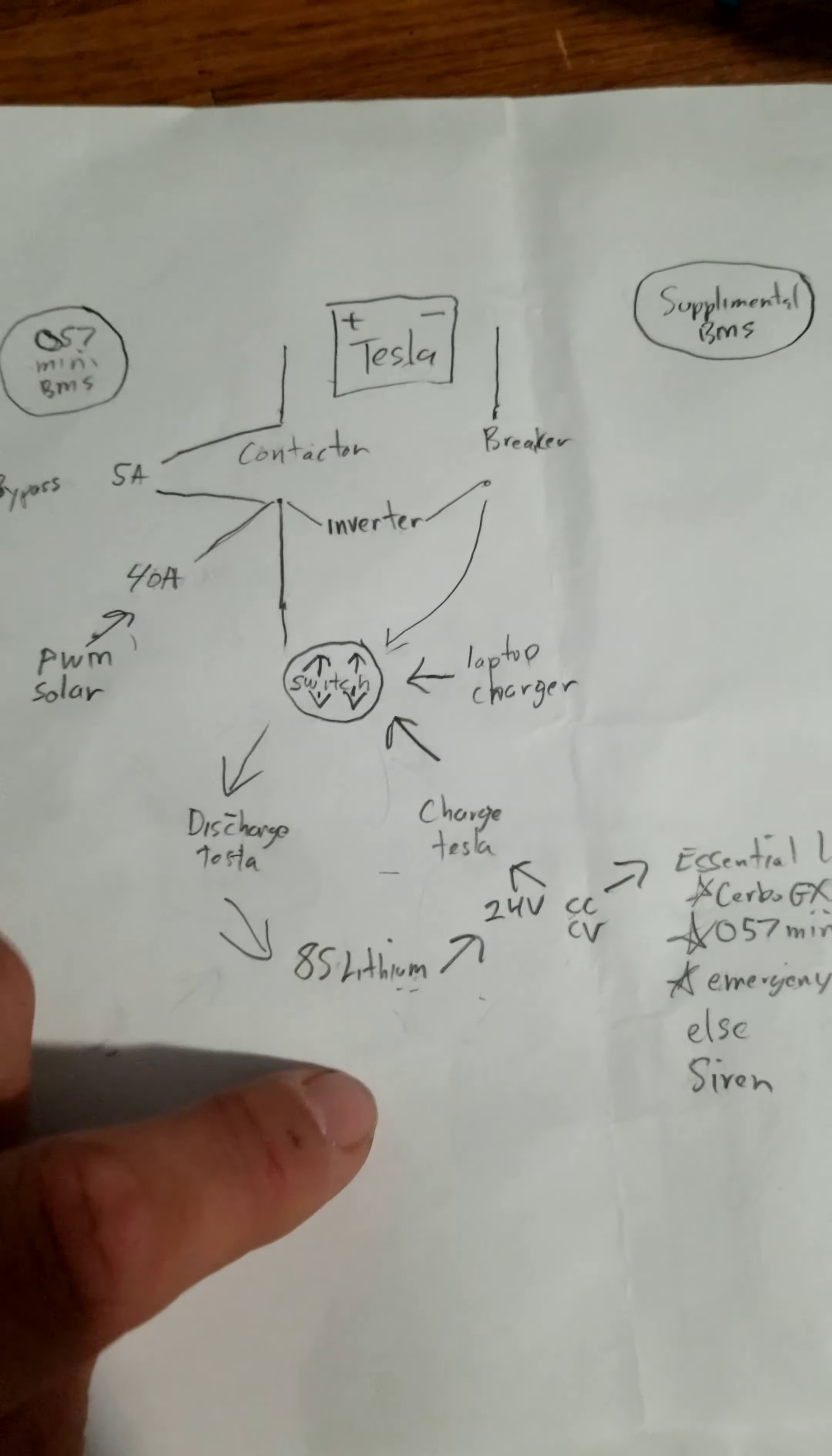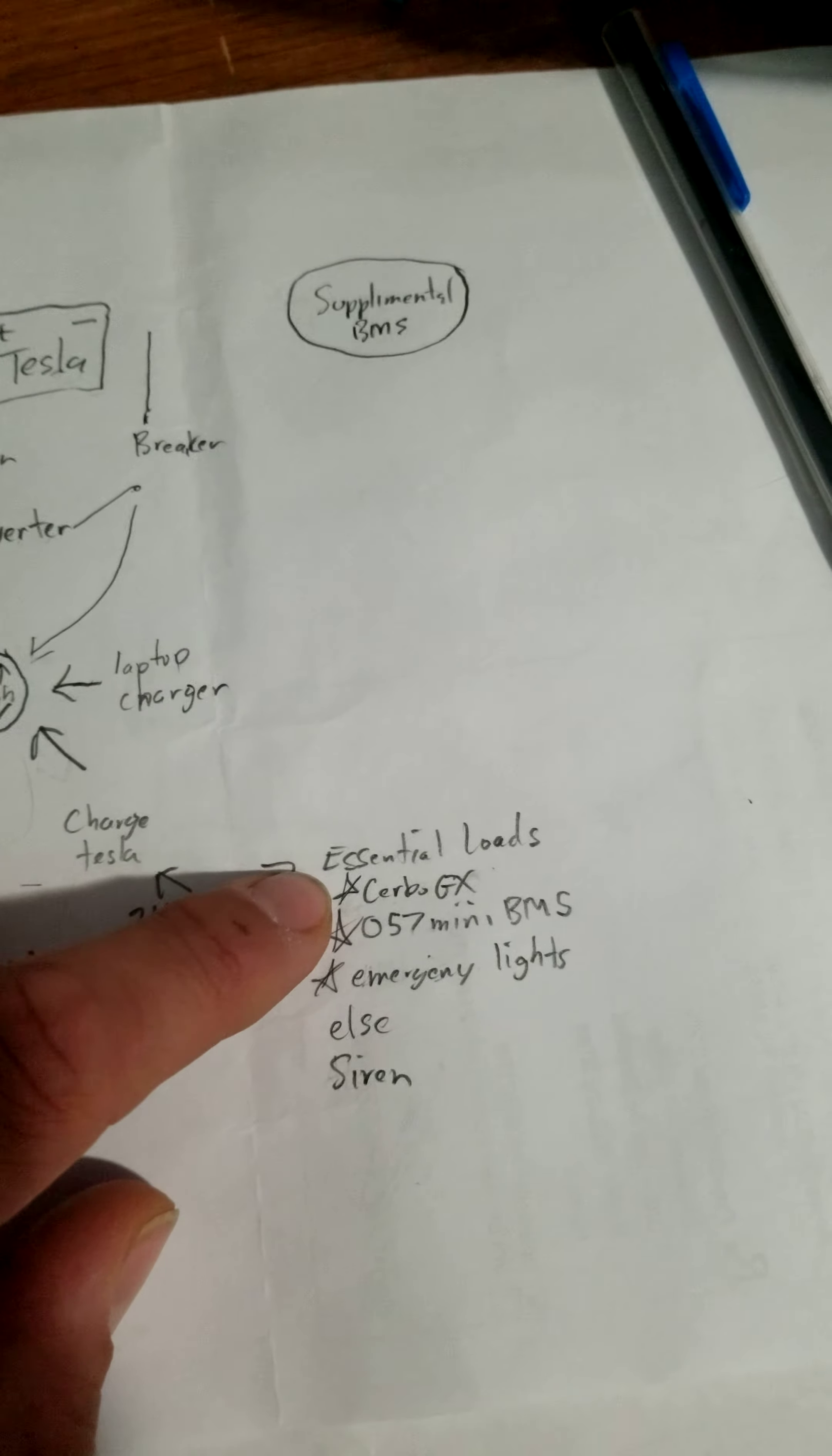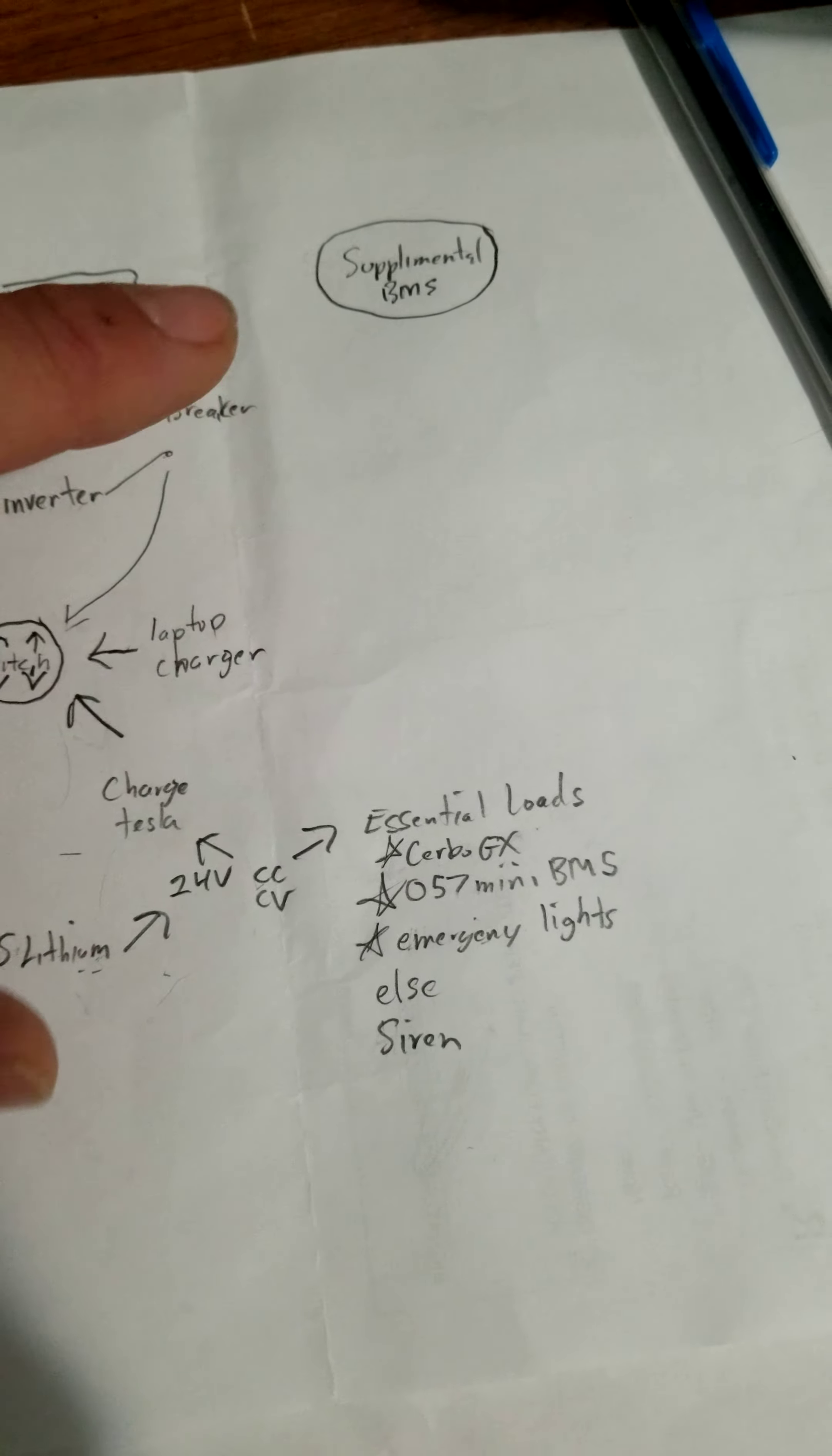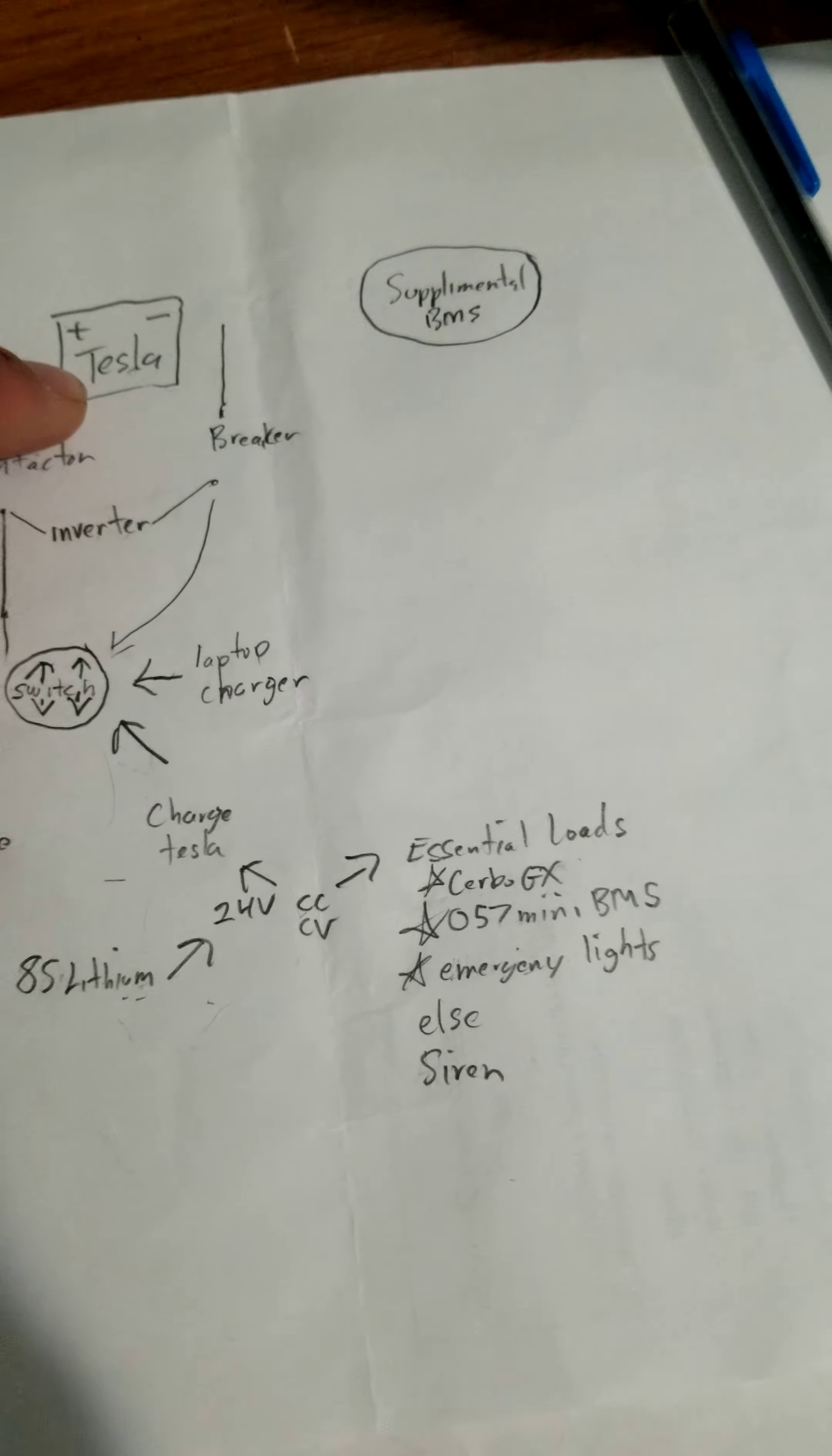That's when the backup battery is going to kick in and start powering the essential loads. That's going to be the Cerbo GX which is what allows you to monitor all of this and actually figure out why the Tesla battery shut down.